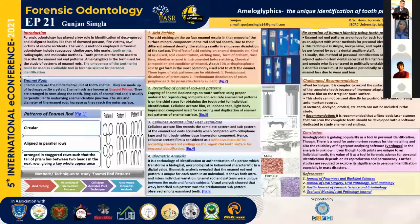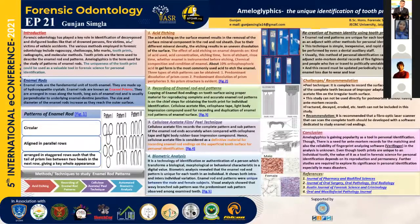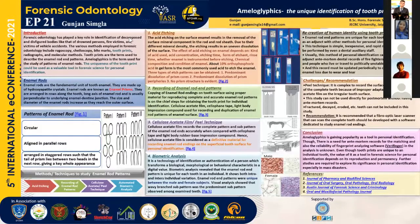There are various methods and techniques to study the enamel rod patterns. The first is acid etching — the use of an acid substance to prepare the tooth's natural enamel for the application of an adhesive. Acid roughens the surface microscopically, increasing retention of resin sealant. Etching of dental enamel with acid removes the smear layer and opens the enamel tubules. The effect of acid etching on enamel depends on the kind of acid used, acid concentration, etching time, form of etching, whether the enamel is instrumented before etching, and the chemical composition and condition of the enamel. About 35% phosphoric acid in gel form is the most commonly used to etch the enamel. Three types of etch patterns can be obtained: predominant dissolution of prism cores, predominant dissolution of prism peripheries, and no prism structure obtained.